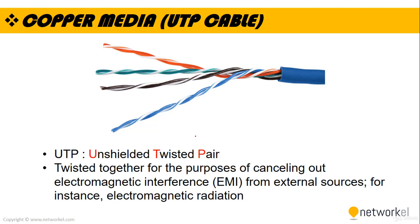Unshielded twisted pair, or UTP, is a type of copper cabling used in telephone wiring and local area networks. Inside a UTP cable there are up to four twisted pairs enclosed in a protective plastic cover, with a greater number of pairs corresponding to more bandwidth. The two individual wires in a single pair are twisted around each other, and then the pairs are twisted around each other. This is done to reduce crosstalk and electromagnetic interference, each of which can degrade network performance. Each signal on a twisted pair requires both wires.